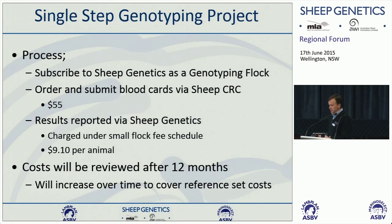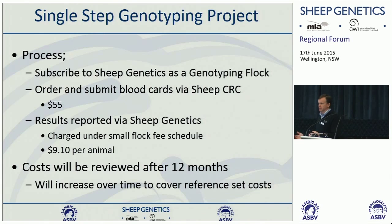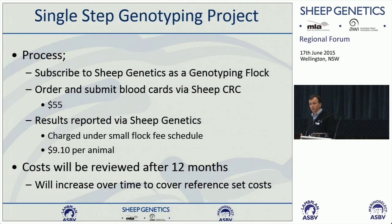Working on current fee structures, it would be the $55 for a DNA test plus something like the small flock fee schedule of $9.10 per animal for breeding value calculation. We need to test that system. We do know over time that cost structure would have to change because those people need to pay their share of maintaining the reference population. But it's something we're interested in rolling out to see whether breeders would use just that DNA test information.